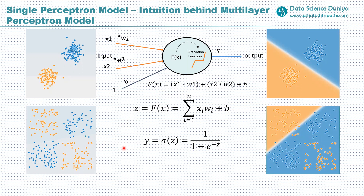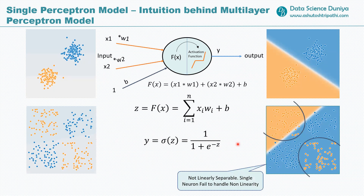That's where the limitation of the single perceptron model occurs. It can draw a line and classify linearly separable data, but for non-linearly separable data it will try to separate with a single line — drawn randomly — and end up misclassifying items. Whether it draws the line here or there, the single perceptron will only draw one line, so we cannot use it for complex problems.